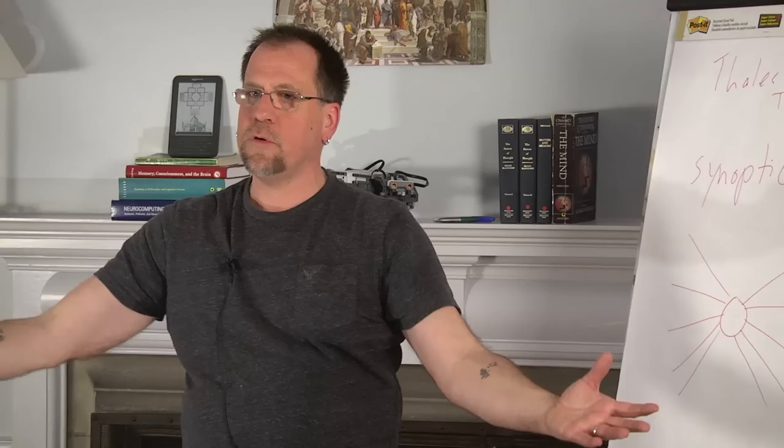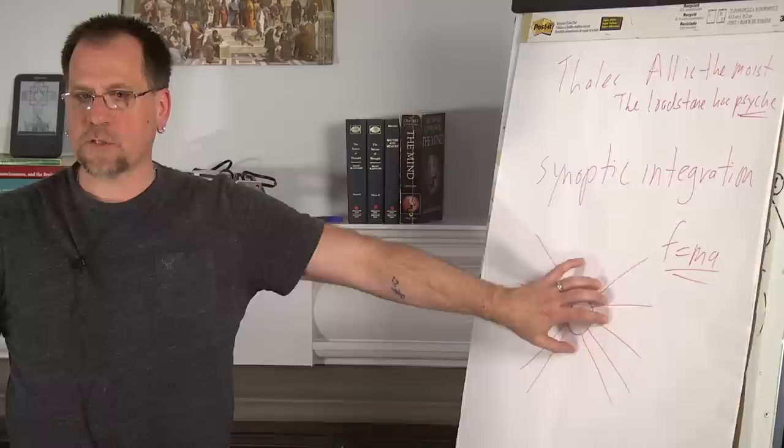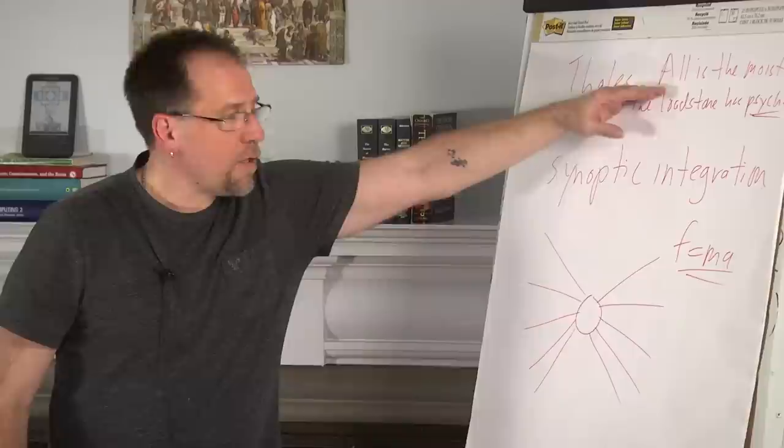So what cognitive science is doing is it's saying we're going to do synoptic integration by creating very highly plausible constructs that allow us to extend this naturalistic process of analyzing, formalizing, and mechanizing. But now we're going to do that with respect to the mind.